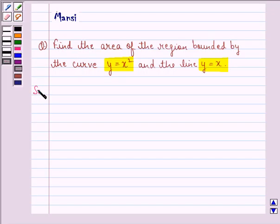Let us start with the solution to this question. The given curve is y equals x square and the line y equals x. Now, putting y equal to x in this one, we get x is equal to x square.